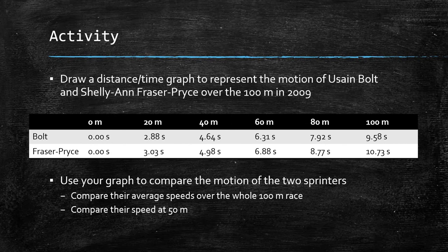Activity: use the provided data to draw a distance over time graph to represent the motion of Usain Bolt and Shelly-Ann Fraser-Price over the 100 metres in a 2009 race. Compare their average speeds over the whole 100 metre race, and compare their speed at 50 metres. Pause the video, do this graph, then take a photo and send it to me via email or Teams for me to check over.